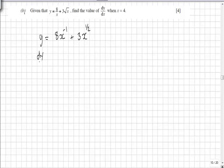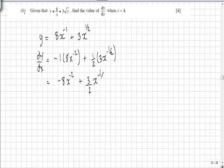Differentiating using our rules we should find that we have minus 1 times 8x to the power of minus 2 plus 1 half times 3x to the minus 1 half. Tidying this up we get minus 8x to the minus 2 plus 3 over 2x to the minus 1 half.